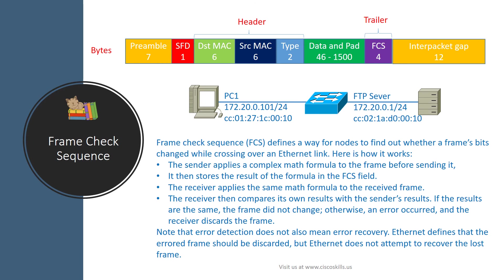The last field in an Ethernet frame is the Frame Check Sequence, or FCS. FCS defines a way for nodes to detect whether frame bits changed while crossing an Ethernet link. The sender applies a complex math formula to the frame and stores the result in the FCS field. The receiver applies the same formula to the received frame and compares its result with the sender's result stored in the FCS field.